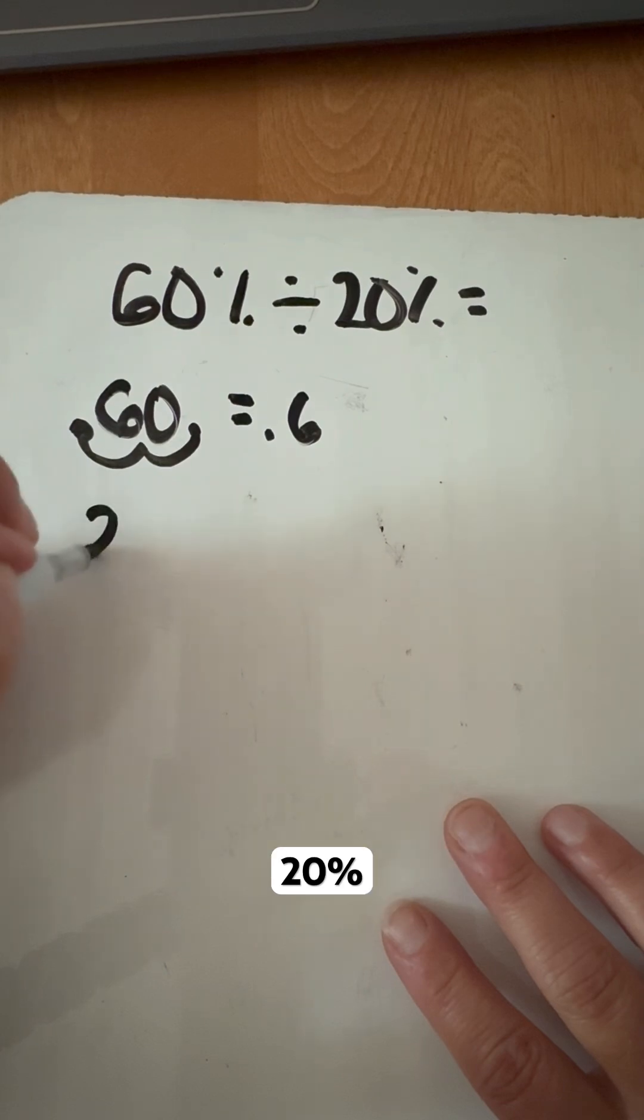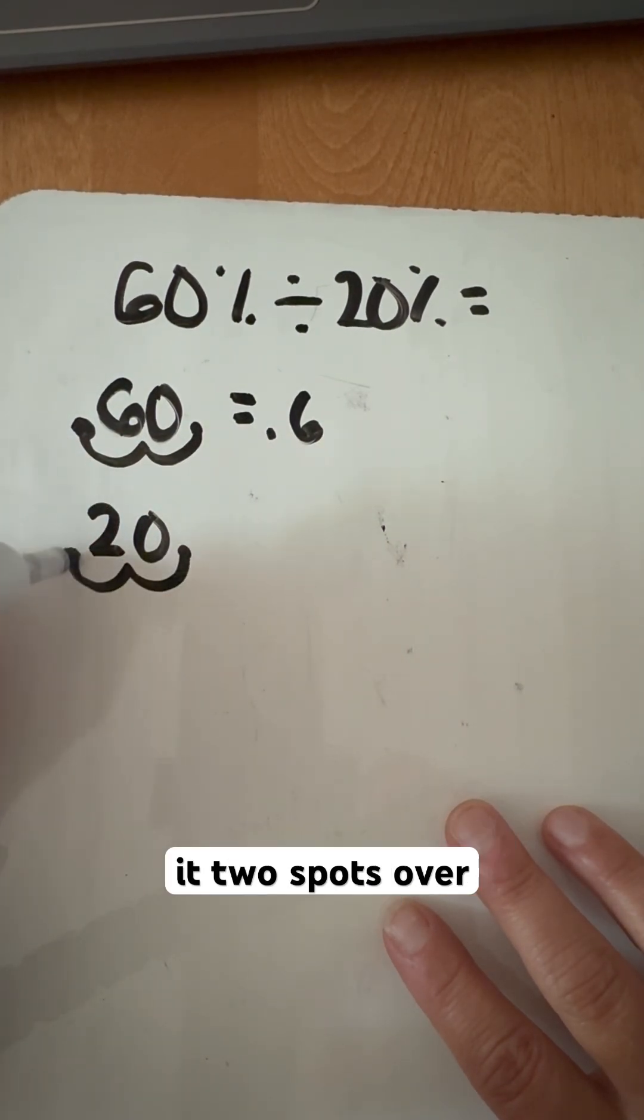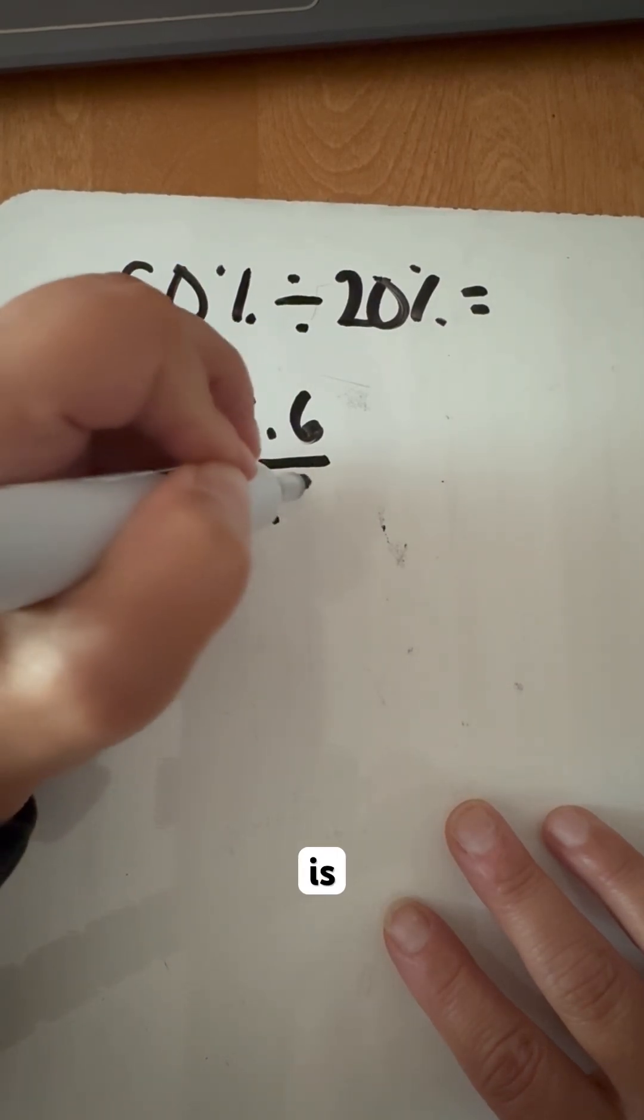Do the same thing with that 20%. Decimal at the end, there is no decimal in there. We're going to move it two spots over and put that in front of it. So it is 0.2.